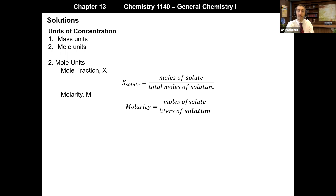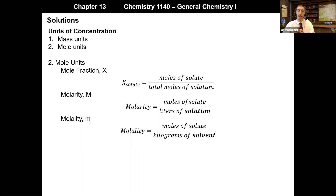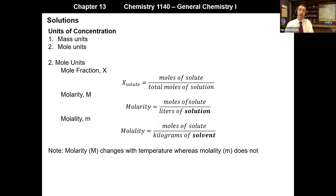There is one other unit that sounds very similar to molarity but has significant differences: molality. Molality is sometimes more useful than molarity. It is given the symbol lowercase m, and molality is the moles of solute divided by the kilograms of solvent — not kilograms of solution, but kilograms of solvent. Notice that the numerator for all three mole units is moles of solute; it just differs what the denominator is. Molality changes with temperature, whereas molality does not.